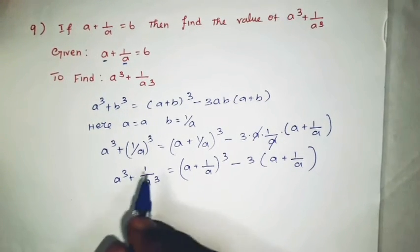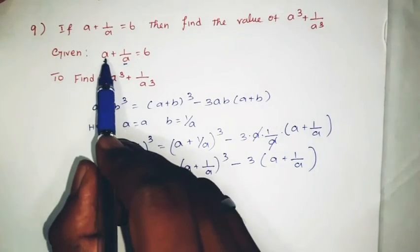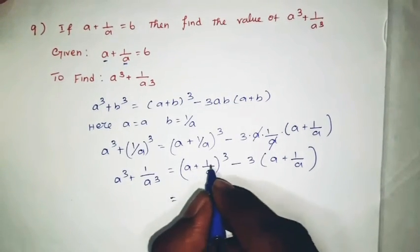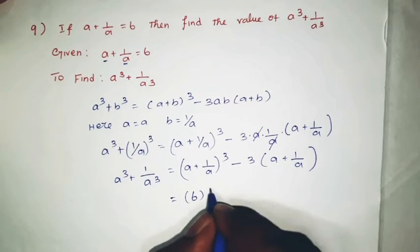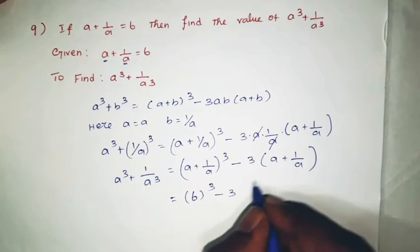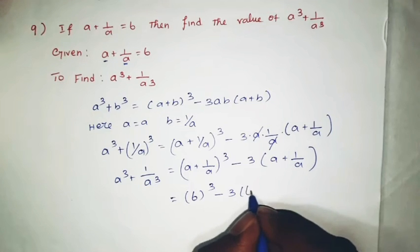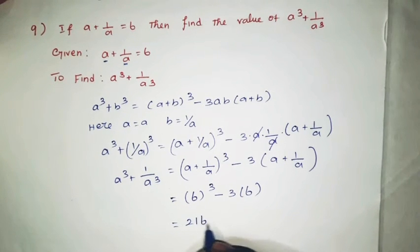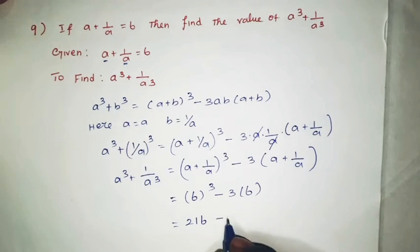Now substitute the given value. a plus 1 by a equals 6, so: 6 cube minus 3 into 6. 6 cube is 6 times 6 equals 36, times 6 equals 216. So 216 minus 3 times 6 is 18.